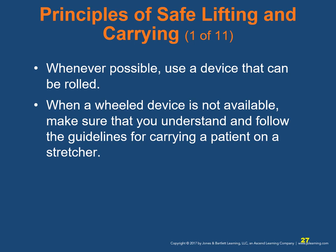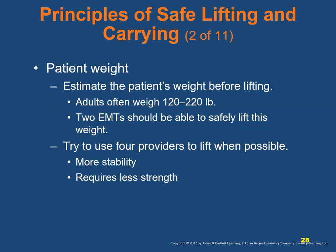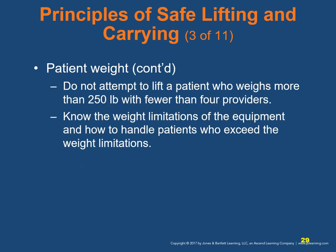Principles of safe lifting and carrying: whenever possible, use a device that can be rolled. When a wheeled device is not available, follow proper guidelines for carrying a patient on a stretcher. Estimate the patient's weight before lifting — adults often weigh between 120 and 220 pounds, and two EMTs should be able to safely lift this weight. Try to use four providers when possible, as it gives more stability and requires less strength. Do not attempt to lift a patient who weighs more than 250 pounds with fewer than four providers. Know the weight limitations of equipment and how to handle patients who exceed those limitations.